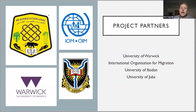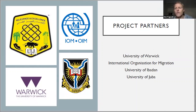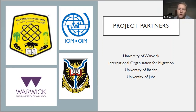The project partners are the University of Warwick. This is not a traditional humanitarian grant — it's a pure academic grant with a humanitarian component. The way UK academic funding works is that the lead of the project is called a principal investigator, and that has to be an academic institute. So Warwick University, Professor Victoria Squires, is the PI. IOM, the University of Ibadan in Nigeria, and the University of Juba in South Sudan are the co-investigators.